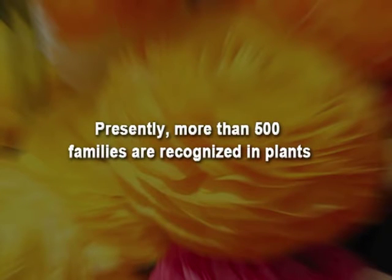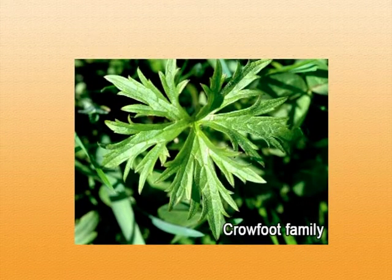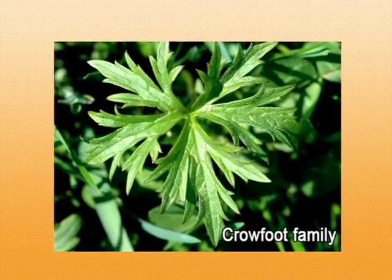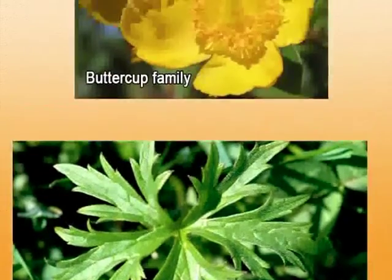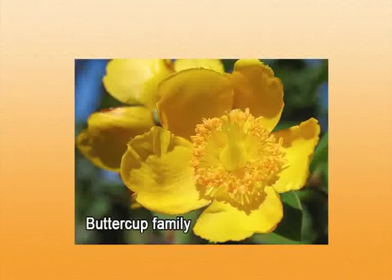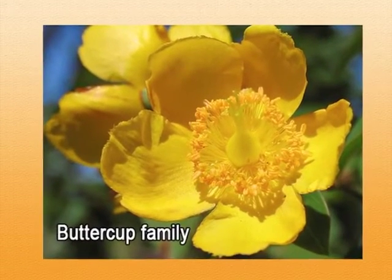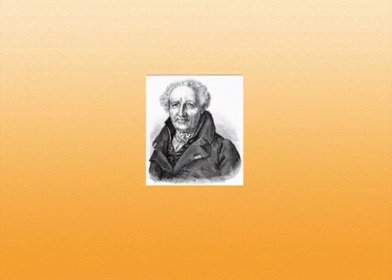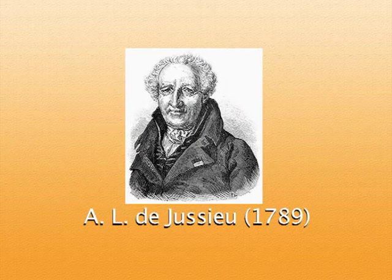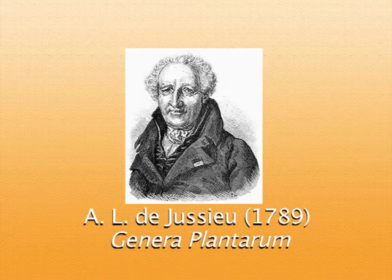At present, more than 500 families are recognized in plants all over the world. The Ranunculaceae is commonly known as the crowfoot family because the leaves of Ranunculus are similar to the foot of a crow, or sometimes it is also known as the buttercup family because the corolla in Ranunculus looks like a buttercup. The Ranunculaceae as a family was first established by a French botanist, De Jussieu, in 1789 in his book Genera Plantarum.